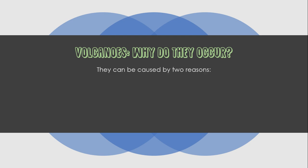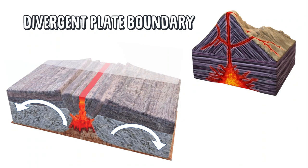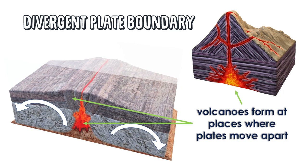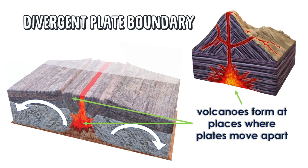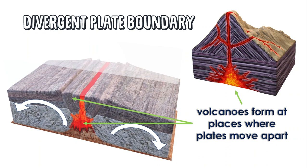When the earth's crust moves, it disturbs the mantle and crust, resulting in a volcano or an earthquake. The first reason this occurs is a divergent plate boundary, where tectonic plates move apart. In a divergent plate boundary, volcanoes form at places where the tectonic plates are moving apart from one another, as indicated by the arrows shown.